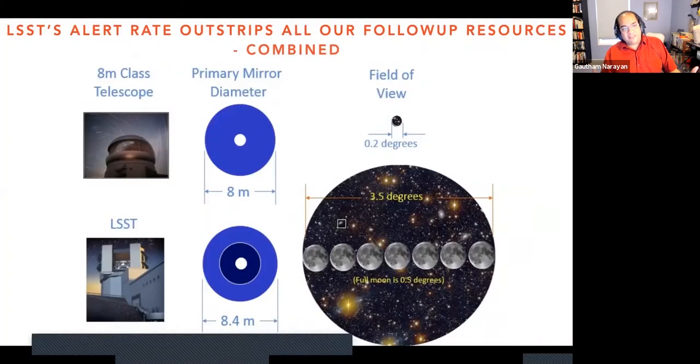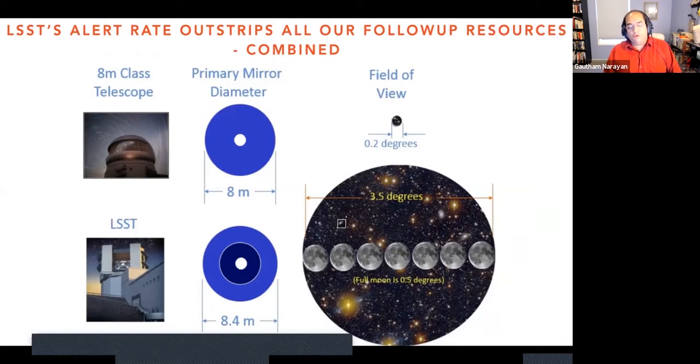This is really great, right? But this is the accumulated total of all spectroscopically confirmed supernovae that we found from a whole bunch of these surveys over, well, actually more than just decades, centuries. And to give you a sense of how LSST is, LSST will do more than this in six months. In other words, LSST's alert rate outstrips all of our follow-up resources combined. You could give me every hour on every spectroscopic facility on the planet, and there would still not be enough time to follow every LSST transient. The core reason for that is that the field of view of all of these 8-meter-class telescopes is minuscule compared to LSST's enormous field of view, which is something like seven full moons across.